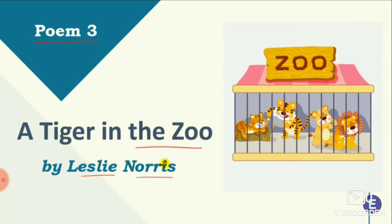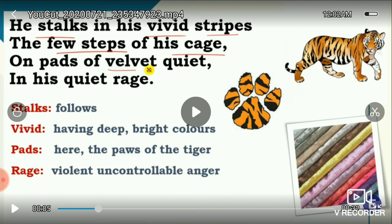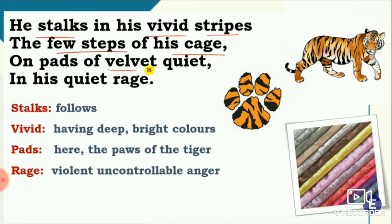In this poem, Leslie Norris displays the life of a tiger who is confined in a cage in the zoo, and compares it with how the tiger's life would be in the forest. That contrast is displayed in this poem. The poem is very short — there are five stanzas with four lines each.